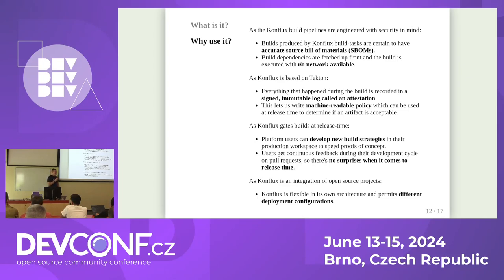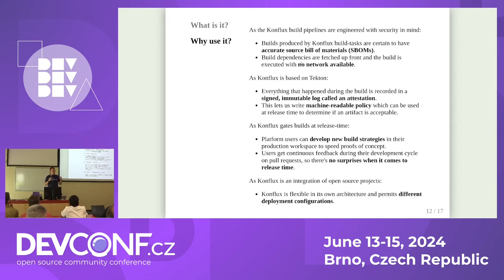Conflux gates builds at release time, not at build time. You can actually do a build in Conflux that uses network egress to reach arbitrary network endpoints. But if you try to release it, the Enterprise Contract subsystem looks at the history of what happened during the build, understands it had network access, and forbids that artifact from going to that endpoint — if that's what the policy says. This is what enables developers to build new strategies, innovate on new ways to build, or try new scanners not yet sanctioned by InfoSec — and then bring it to the platform owners to decide whether to allow it before moving to production releases.